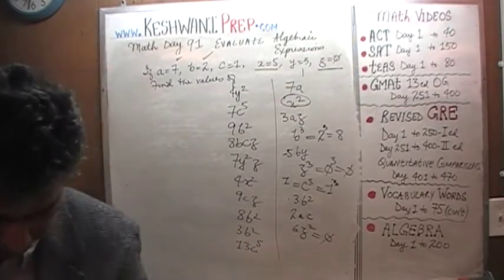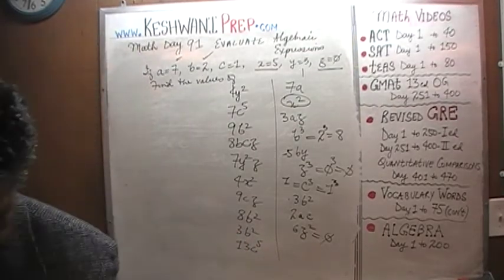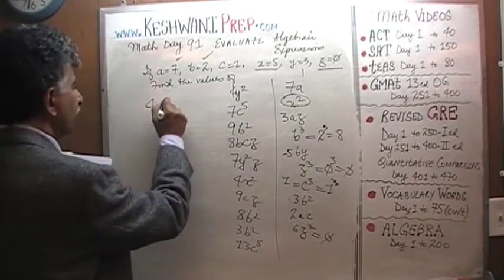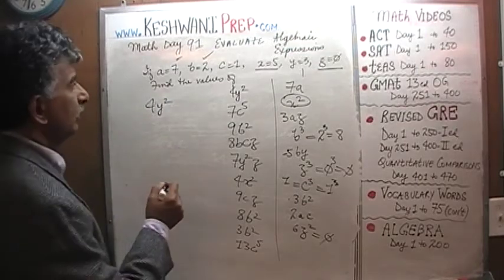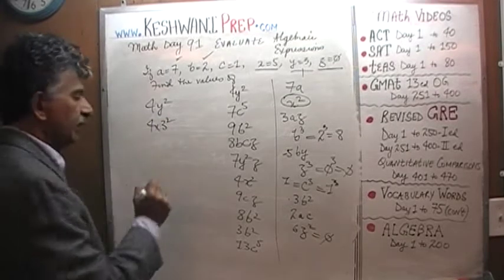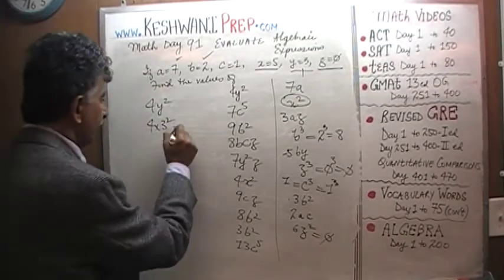Let's go through them one by one, see what we can do here. 4Y squared is the first one. Y we know is 3, so it's 4 times 3 squared. 3 squared is 9, times 4 is 36.